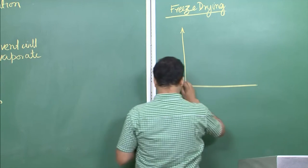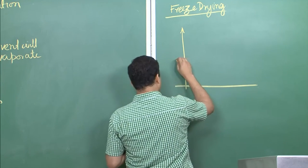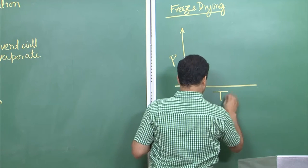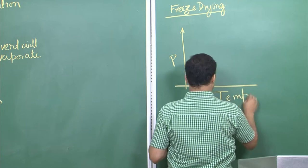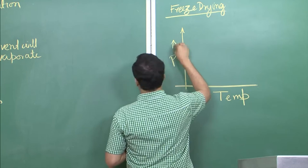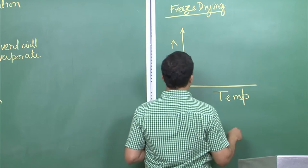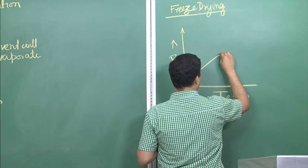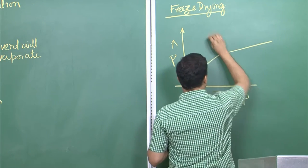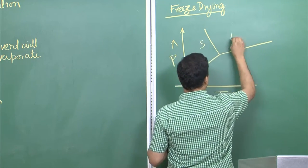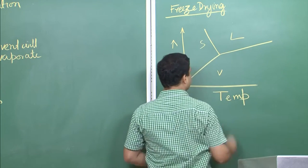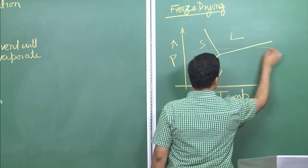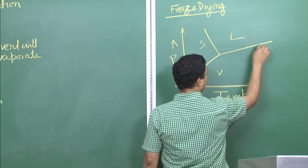So instead of evaporating, it is sublimating, and therefore you are able to get just the solute. Let me draw what the pressure-temperature plot would look like, because this is what makes this process different from spray pyrolysis. If your solvent had a phase diagram like this — here is your solid, this is liquid, this is the vapor phase — usually you will be somewhere in this pressure range where it goes from solid to liquid and then to vapor.